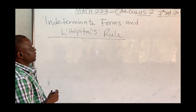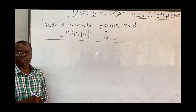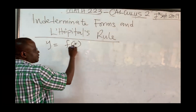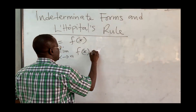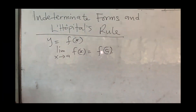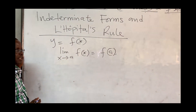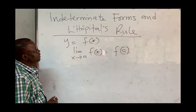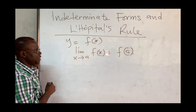We want to look at indeterminate forms and L'Hôpital's rule. We know that a function f(x) is continuous if the limit as x approaches a of f(x) equals f(a). Now there are times where you are taking the limit and it's not clear where the limit goes. In those cases, the limit is difficult to determine, and we say it is indeterminate — but the rule also helps us find that limit.